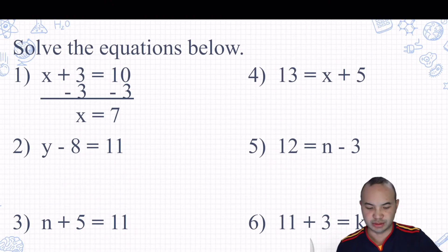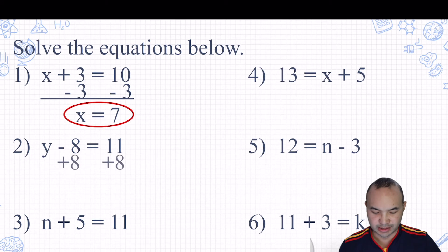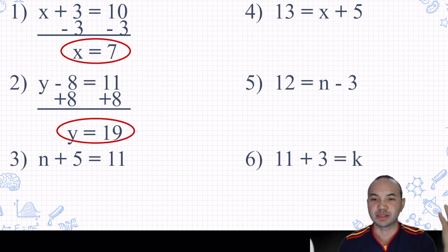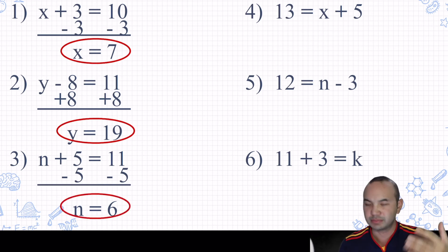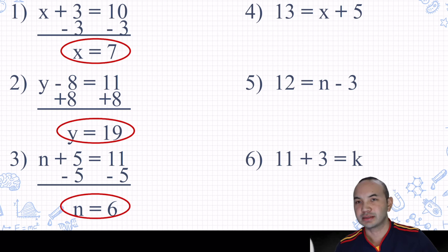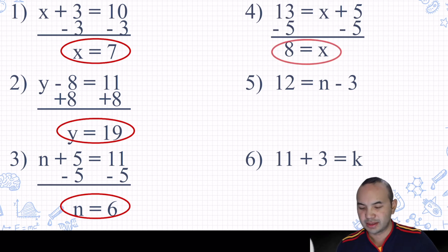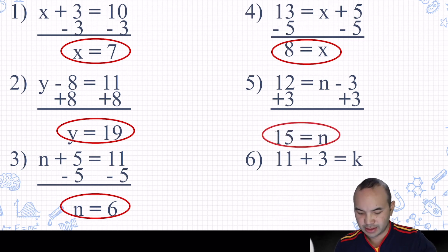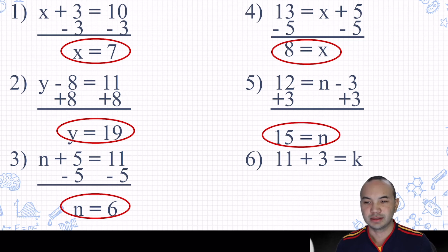Here we did X plus 3 equals 10 — subtract 3 from both sides, we get 7. Y is subtracted from 8 — to undo subtraction, you add, so add 8 to both sides: Y equals 19. For N: 5 is being added to N, so subtract 5 — N equals 6. For X plus 5 equals 13: subtract 5, X equals 8. For N minus 3: add 3, N equals 15. And for K equals 11 plus 3, you just combine like terms — K equals 14.